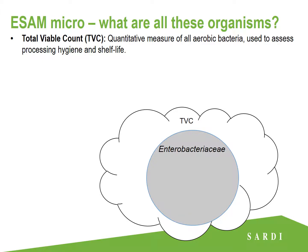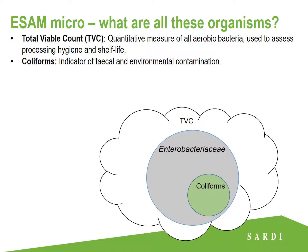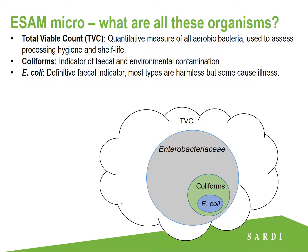Within TVC, we have Enterobacteriaceae, which is a large family of bacteria that contains the rest of our ESAM microbes. These include our coliforms, which give us an indication of fecal and environmental contamination. And within that, we have E. coli, which is our definitive fecal indicator. Now, there are a number of different types of E. coli, most of which are harmless, but a few — our STECs — have serious human health implications, and hence the additional testing requirements for beef.